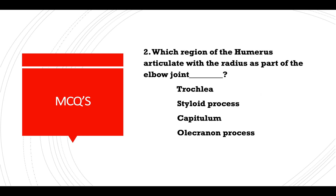MCQ: Which region of the humerus articulates with the radius as part of the elbow joint — trochlea, styloid process, capitulum, or olecranon process? Answer: Capitulum.